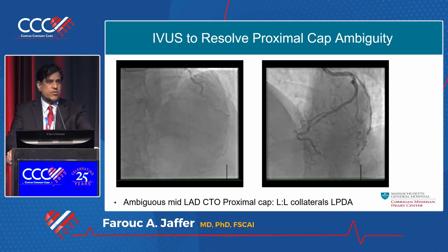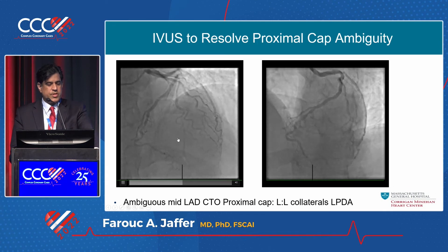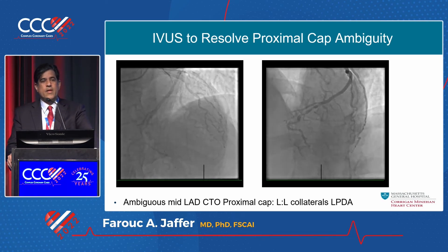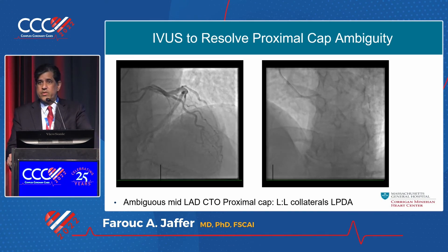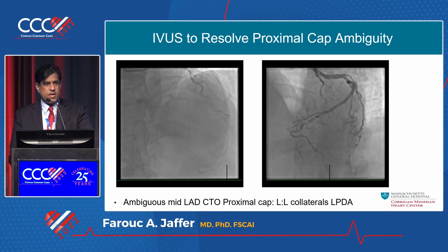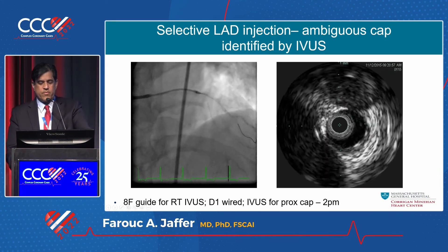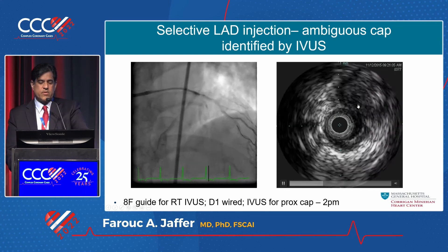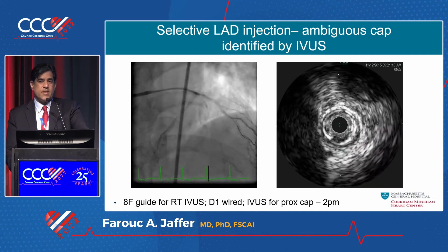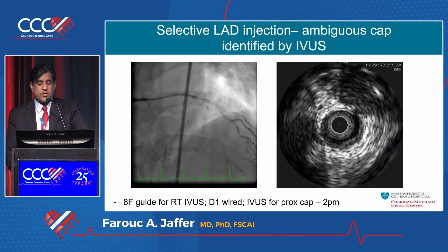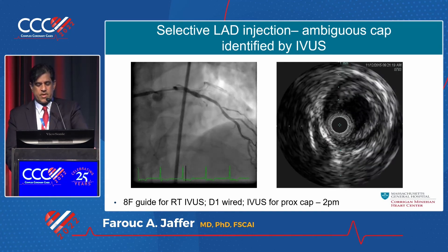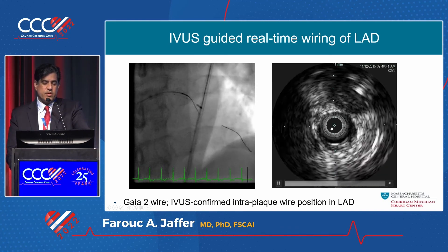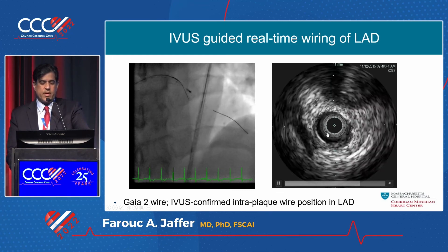Here's an example of resolving proximal cap ambiguity: a flush-occluded mid-LAD total occlusion with a large diagonal nearby — but where is the actual LAD origin? While CT can clarify this non-invasively, in the cath lab we can use IVUS by placing it in the side branch and pulling back to understand where the main vessel is. On the right, you can see the true LAD vessel in the upper right corner. You mark the origin with IVUS, take an angiogram, and then use real-time IVUS guidance to direct the wire into the true lumen — confirmed as true lumen crossing and not the sidewall.